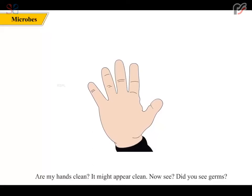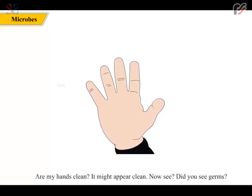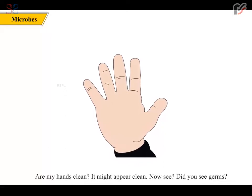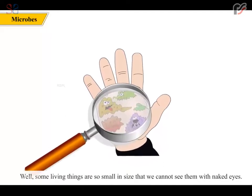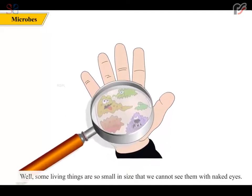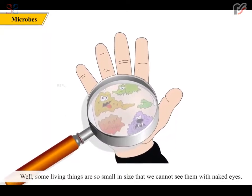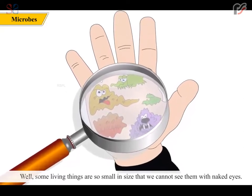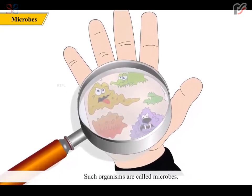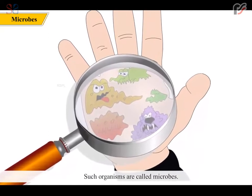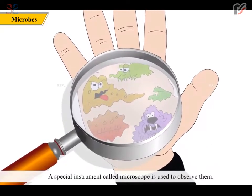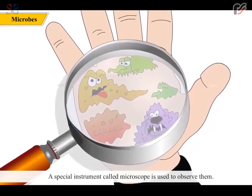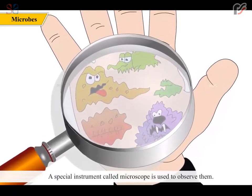Are my hands clean? It might appear clean — but did you see germs? Some living things are so small in size that we cannot see them with the naked eye. Such organisms are called microbes. A special instrument called a microscope is used to observe them.